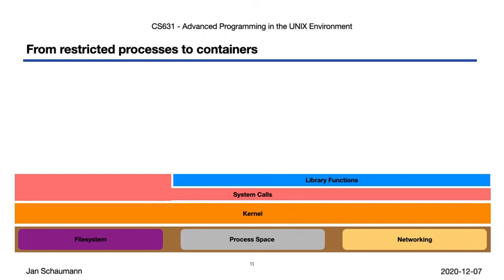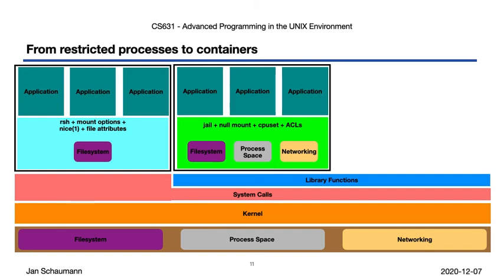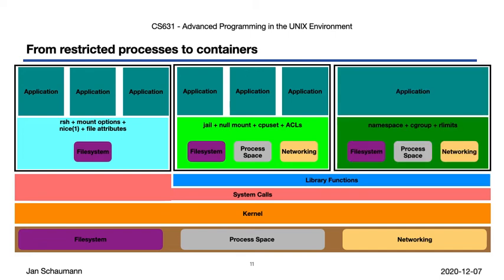When talking about lightweight OS-level virtualization, we have a different situation. We start out again with the basic view we're familiar with, but we can now apply the various lessons from this series of videos — for example, use a restricted shell in combination with certain mount options and a fixed CPU priority, as well as some file attributes, to craft a restricted view of the filesystem and restrict process execution capabilities. Or we can use a jail in conjunction with CPU sets and ACLs to restrict the process, filesystem and network view of certain processes. Or we can create a per-process or per-process-group restricted environment consisting of finely tuned namespaces, cgroups, and resource limits. And that is really all containers are: processes running on our general-purpose Unix operating system that we have restricted such that they can't see or access all the resources.